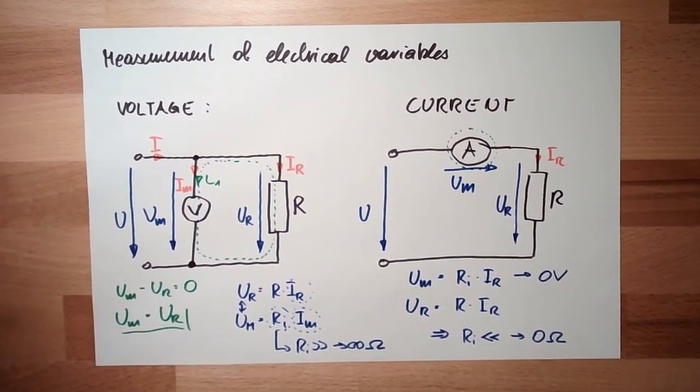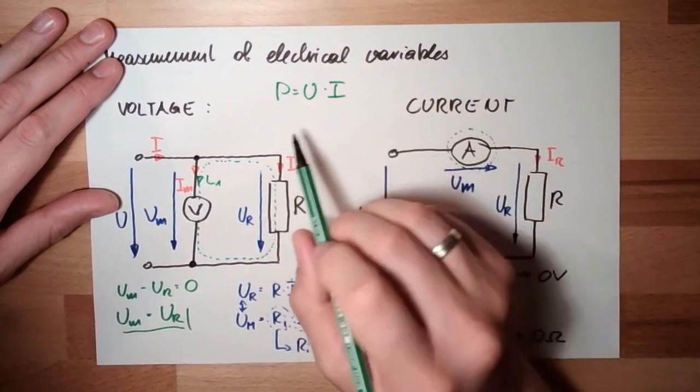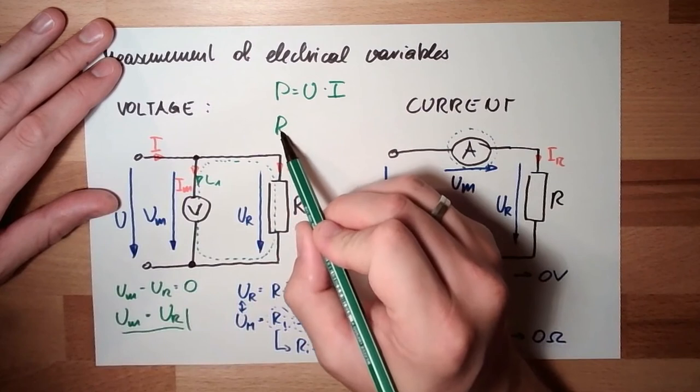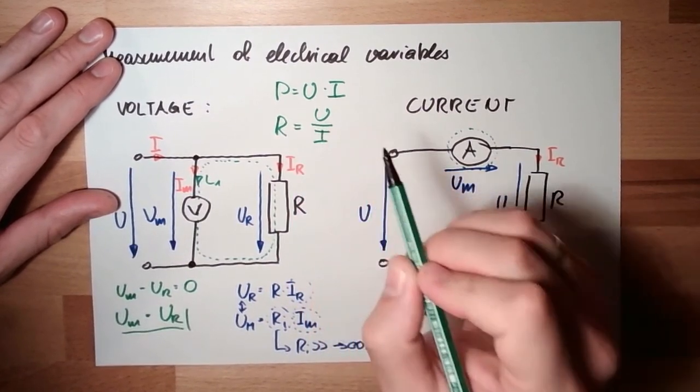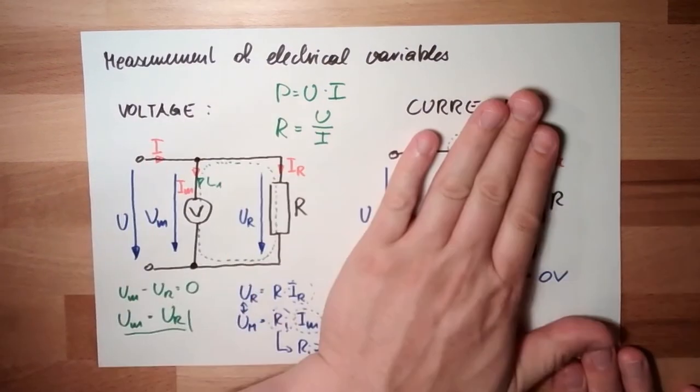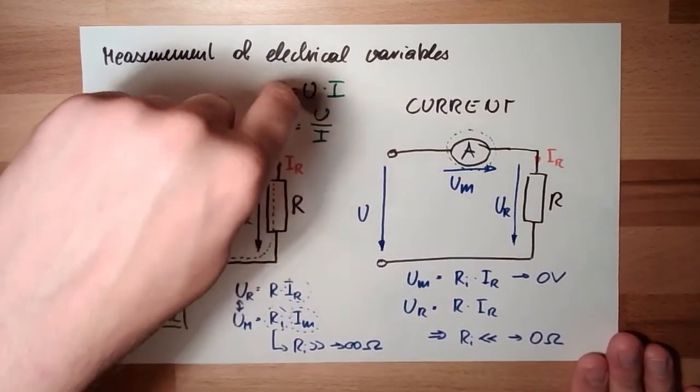Of course, I can also measure the power. If I measure voltage and current, the power is U multiplied by I. I can measure the power as a combination. Or, I can measure the resistance. So, I can measure almost all electrical variables. I can measure voltage, I can measure current. And with voltage and current, I implicitly can measure power and resistance.